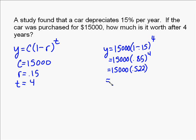On some of these you're going to have to estimate or just do it all in your calculator. So now we multiply $15,000 times 0.522, and we get that the value is $7,830, approximately, you know, around 9 cents.